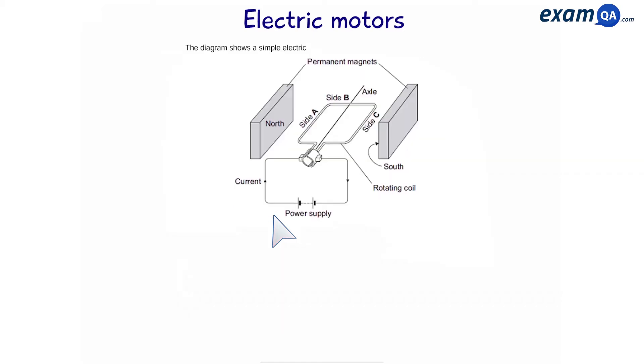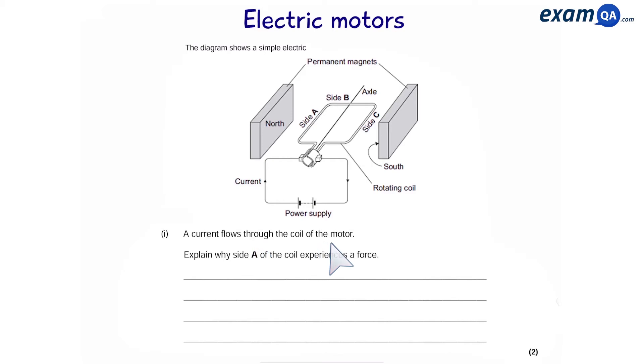Next question. A current flows through the coil of the motor. Explain why side A of the coil experiences a force. This is side A. Now we know that this is just a basic wire, a wire that's inside a magnetic field.